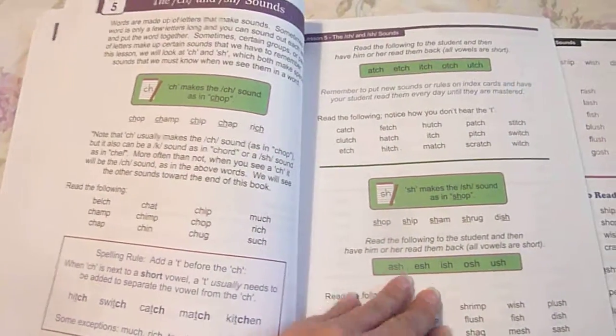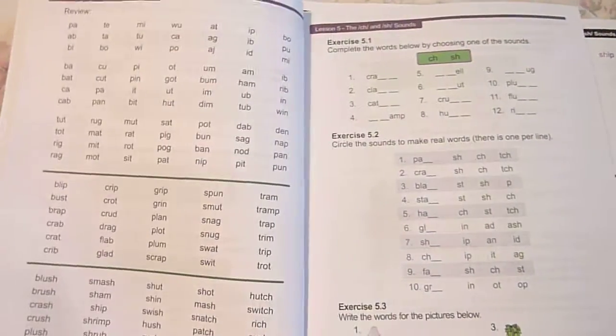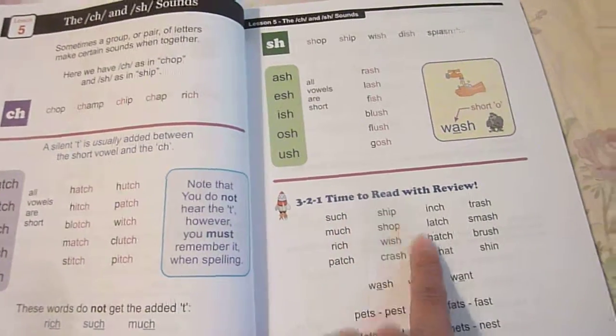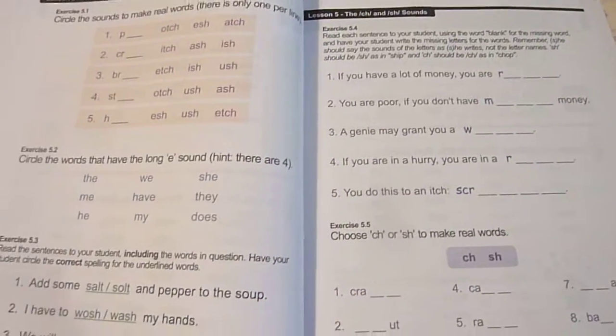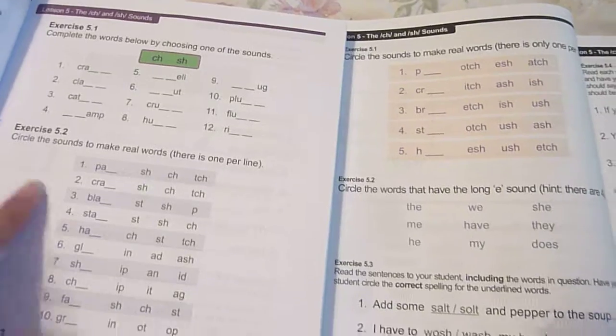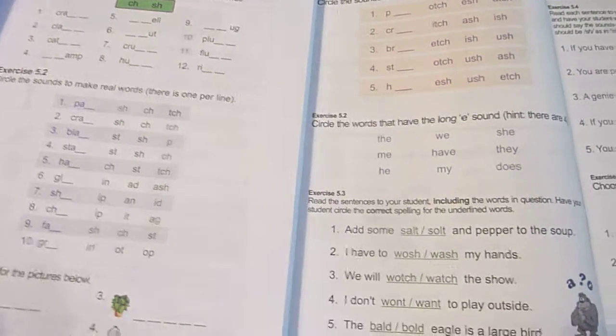And here's lesson five. If I turn the page, this one has three, two, one, time to read with review, and the review on this one looks like this. Exercise 5.1 and here's exercise 5.1, 5.2, and 5.3.